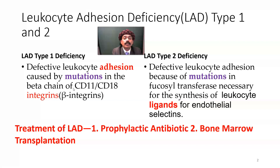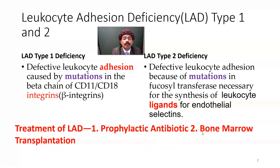What is the treatment? Treatment involves prophylactic antibiotics and bone marrow transplantation. Prophylactic antibiotics are used to prevent infection, while bone marrow transplantation provides healthy leukocytes that can adhere to the endothelial cells.